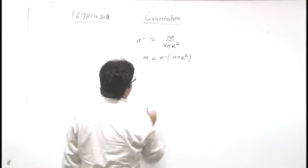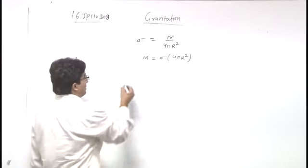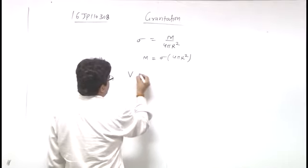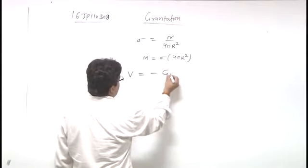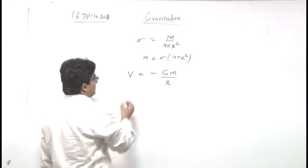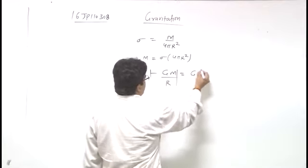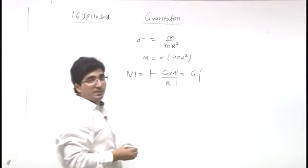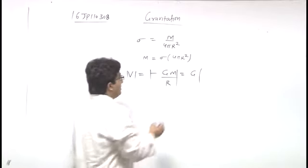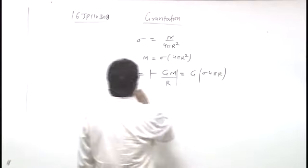Sigma is same for both spheres. Now potential at the center of spherical shells, v equals minus gm by r. We can take magnitude, so magnitude is gm by r. Now gm is taken as sigma 4 pi r square, r is cancelled out. So sigma 4 pi r is potential.